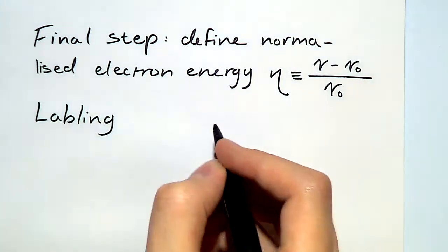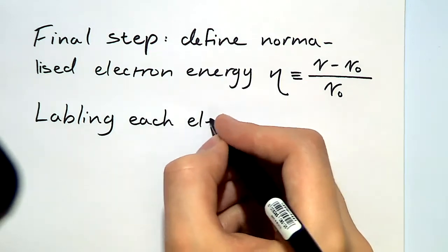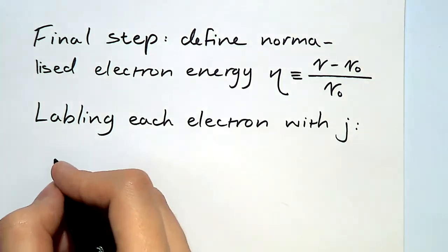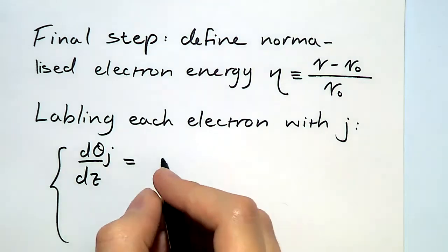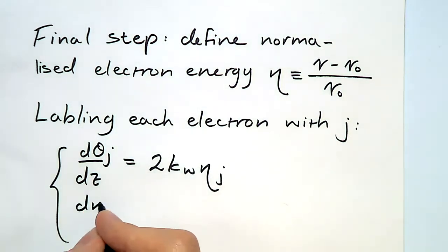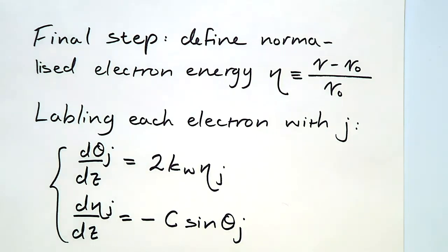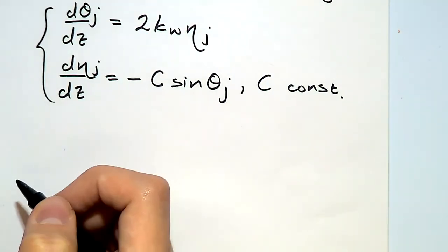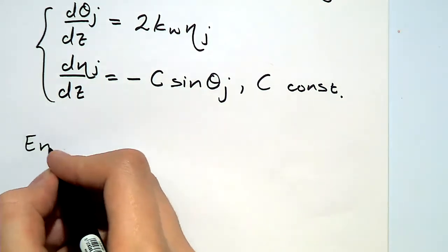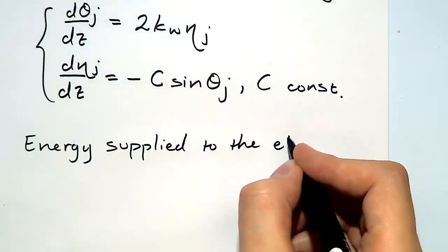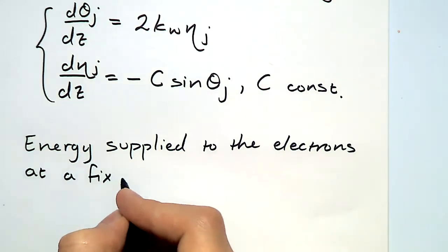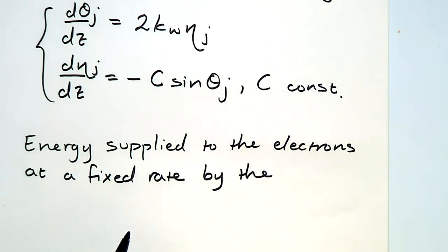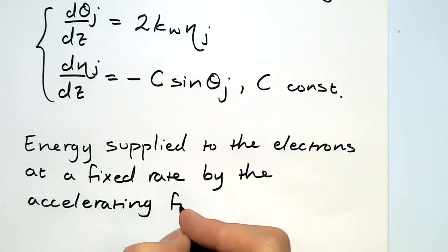Labeling each of the electrons with j, we now finally get the equations of motion for the ponderomotive phase and the relative energy. That looks quite simple. So these two coupled equations relating the change in the ponderomotive phase to the change in the energy of each of the electrons now controls the evolution of the system.